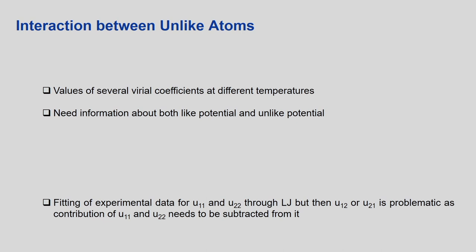Now let us consider the interaction between unlike atoms. Until now we have assumed all atoms are similar. The complexity increases when we talk about unlike atoms, such as carbon and hydrogen, or carbon and nitrogen. We need to define the interatomic potential between these two different atoms in order to obtain the second virial coefficient.